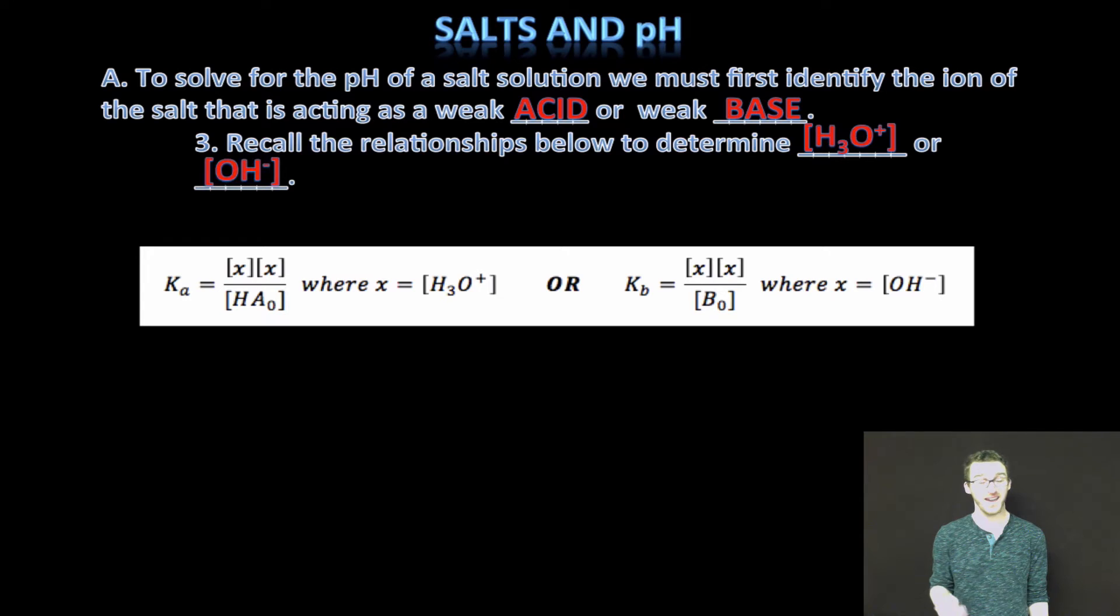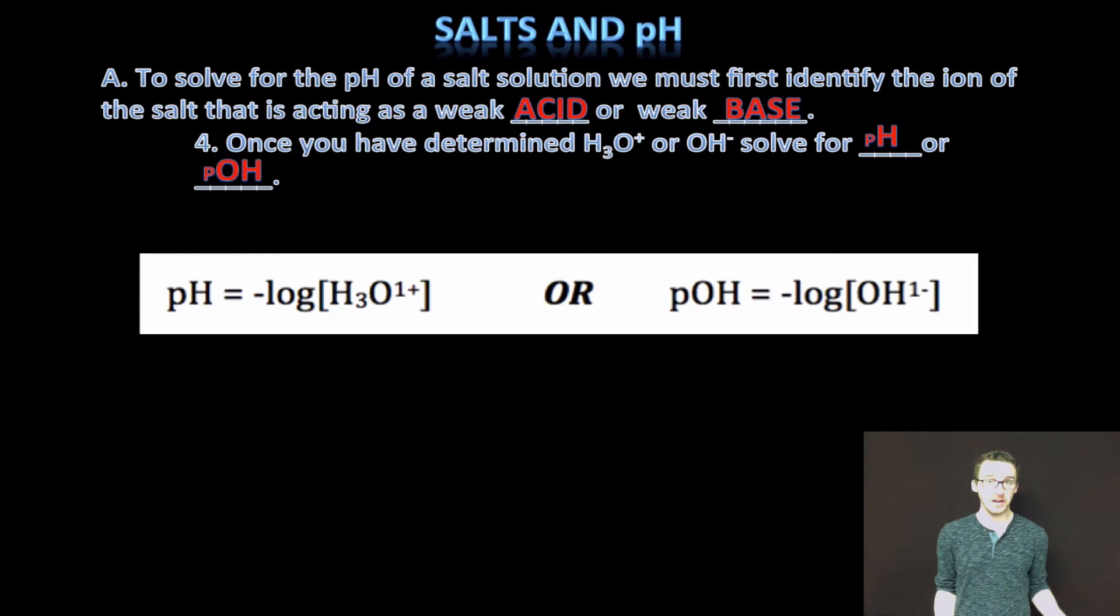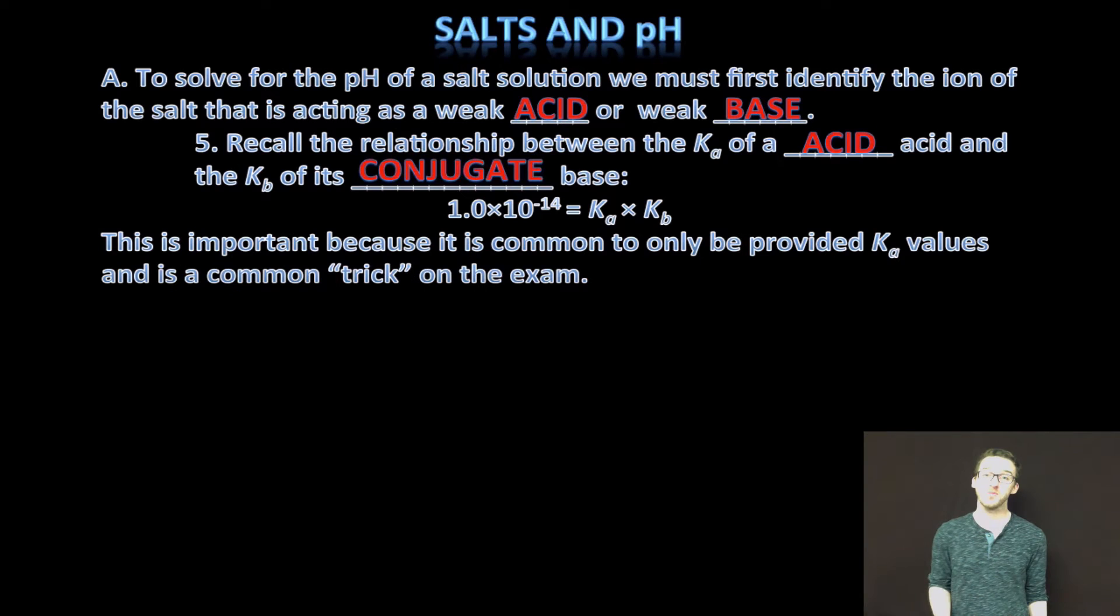Keep in mind your expressions for Ka and Kb and recognize that many times we're able to do the x is small approximation to make the math a lot easier. Then once you've used your ICE table and that Ka or Kb expression, just remember your formulas for pH or pOH. And then finally, remember this important relationship between Ka and Kb because commonly you'll be given information about the Ka for a weak acid, but the ion that you'll be working with in your salt solution is acting as a weak base. So 1 times 10 to the minus 14 equals Ka times Kb is an important one and one that'll get you out of many of those trick questions that the college board will like to throw at you.